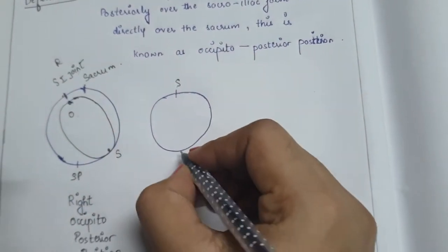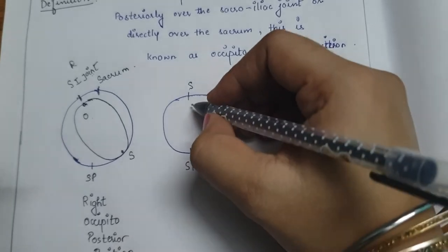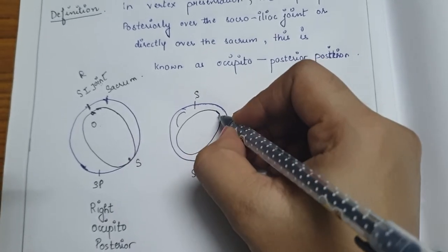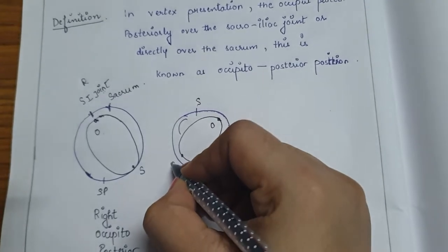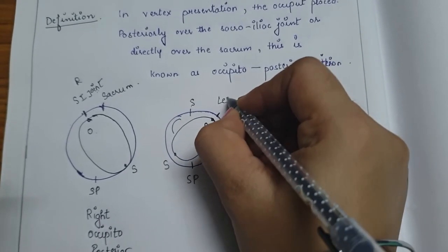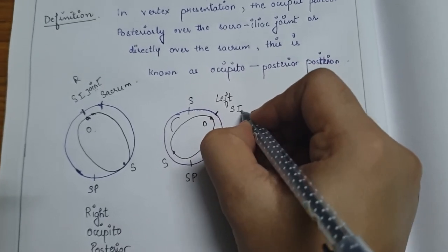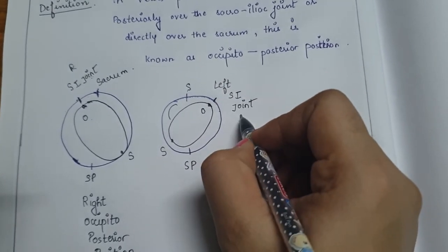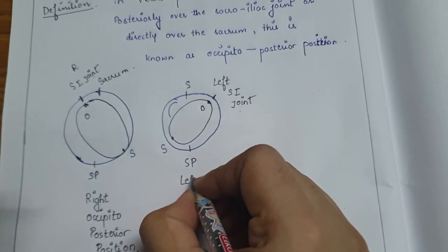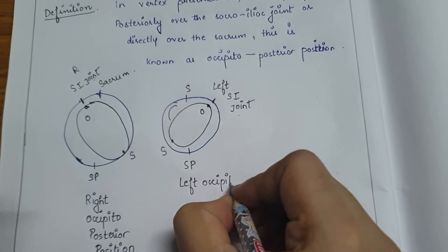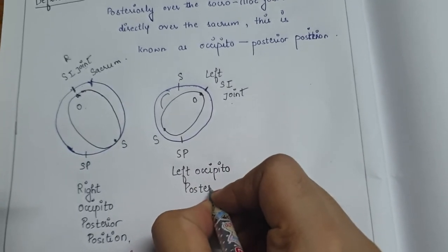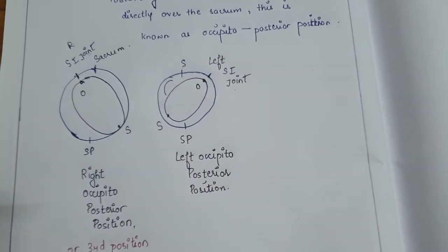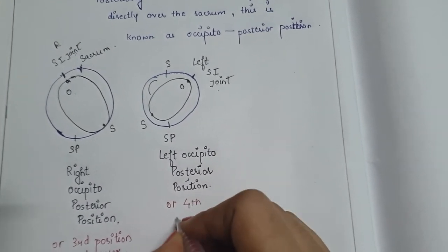The next term: here we have the sacrum, symphysis pubis, occiput, and sinciput, and this is the left sacroiliac joint. When the occiput lies over the left sacroiliac joint, that position is known as left occipitoposterior position, and traditionally this position is also known as the fourth position of vertex.